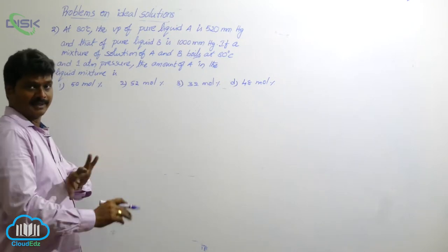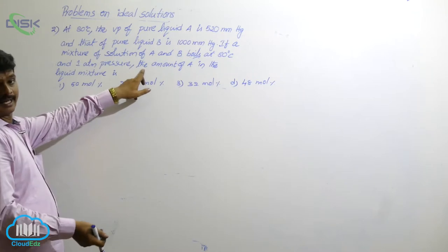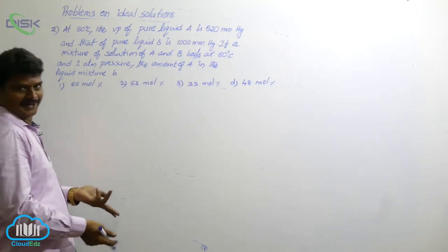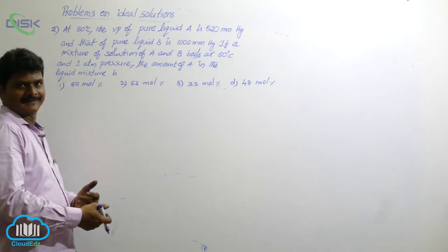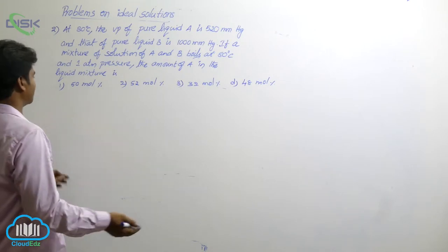p0A, p0B, we know that. We have to find out the mole fraction of A at this temperature. That means xA we have to find out. So which formula we have to use? Raoult's law for ideal solutions.